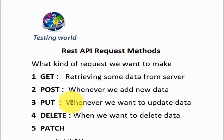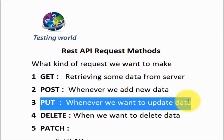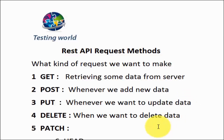Next is PATCH — an important method that is quite similar to PUT. When using PUT, suppose I have a bug with 5 fields: SUMMARY, DESCRIPTION, REPORTED BY, ASSIGNED TO, and PRIORITY, but I only want to update DESCRIPTION. With PUT, I still have to send all 5 fields to the server — one with the updated value and the rest unchanged. But with PATCH, I can send only the updated field. Out of 5, only one field needs to be updated, so I send just that one using PATCH.